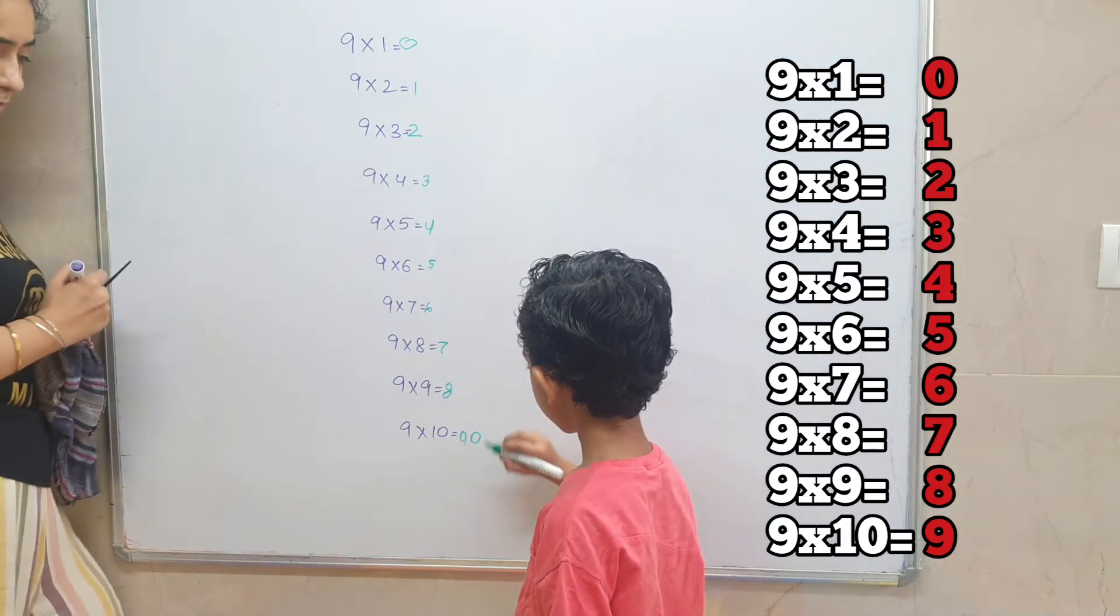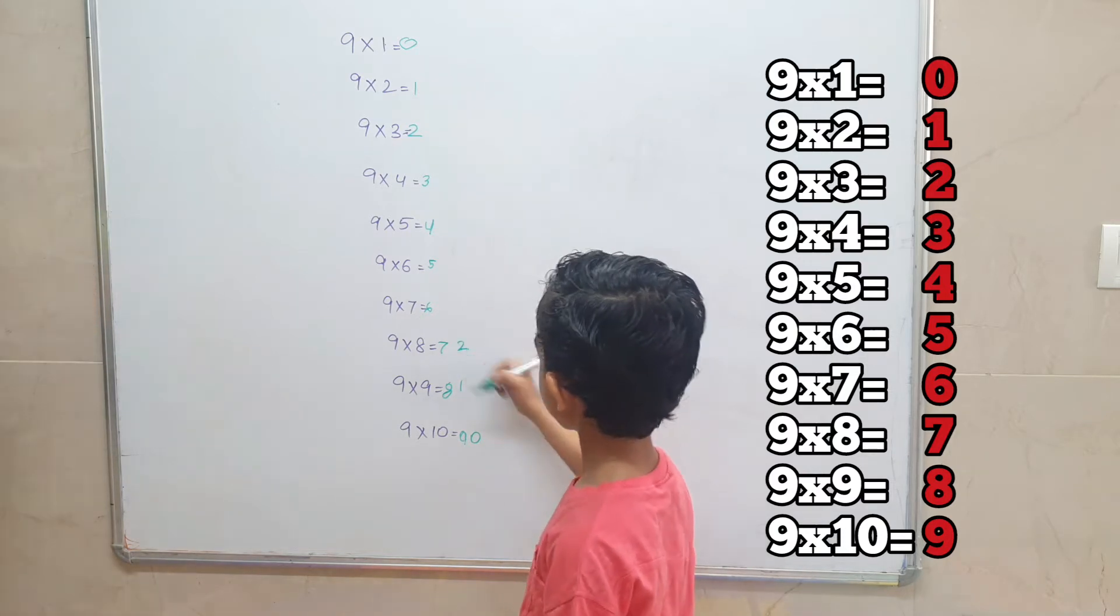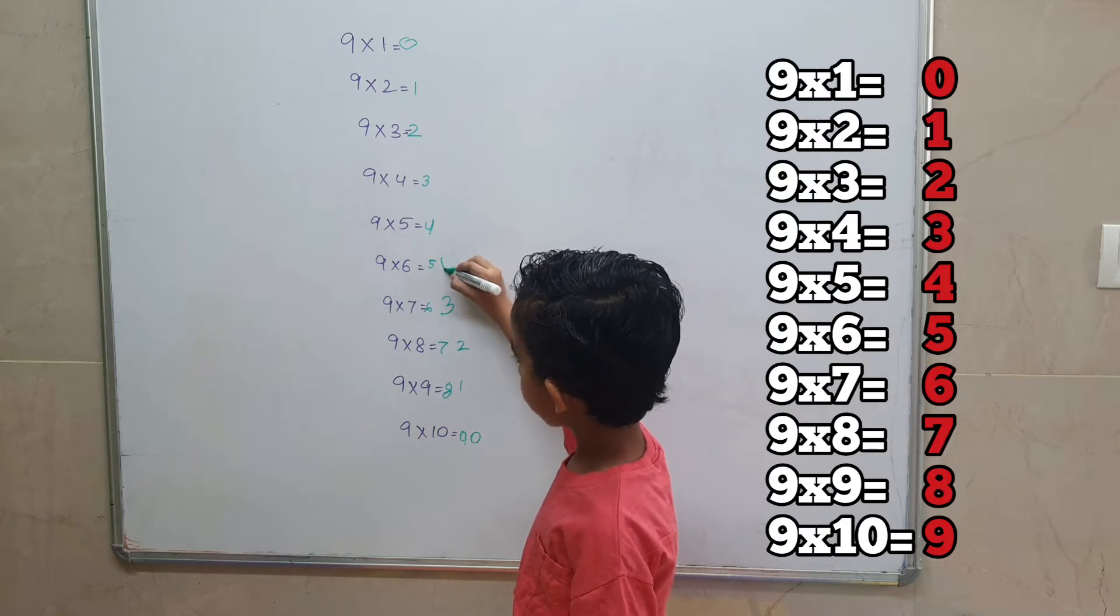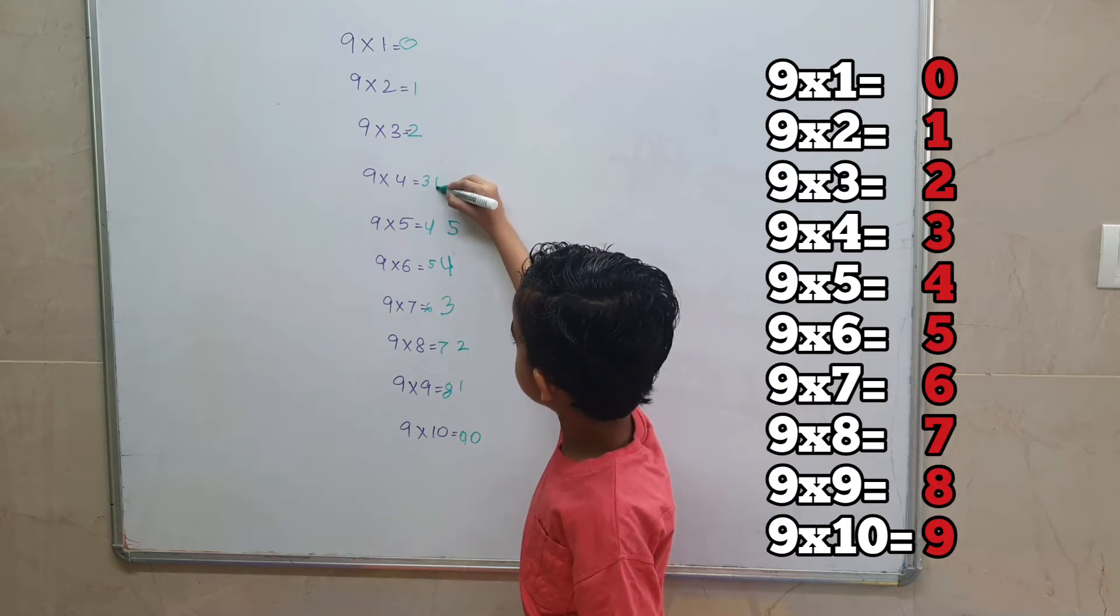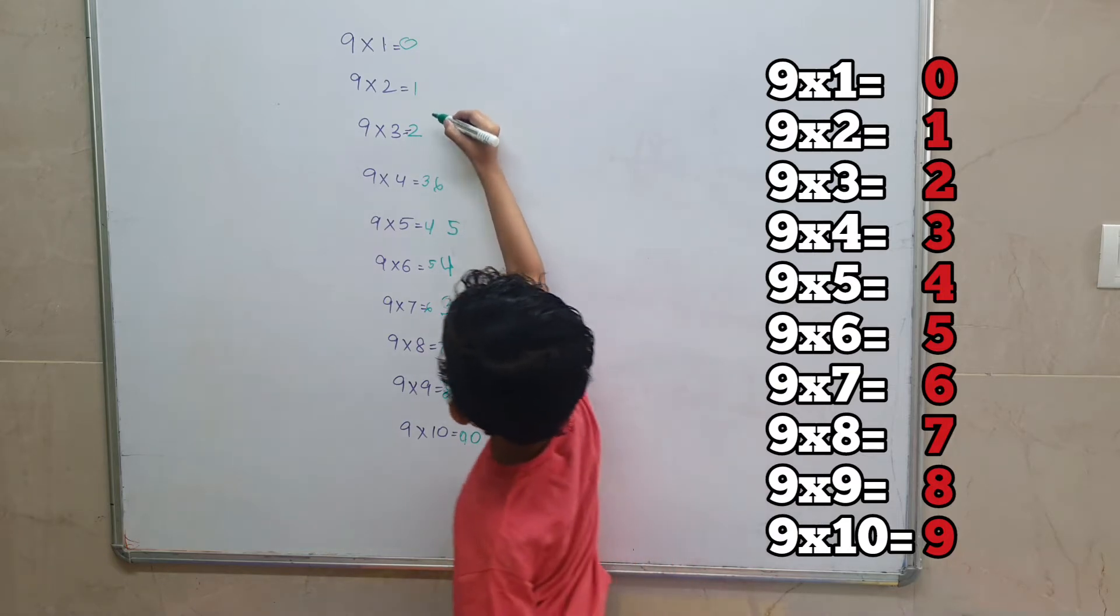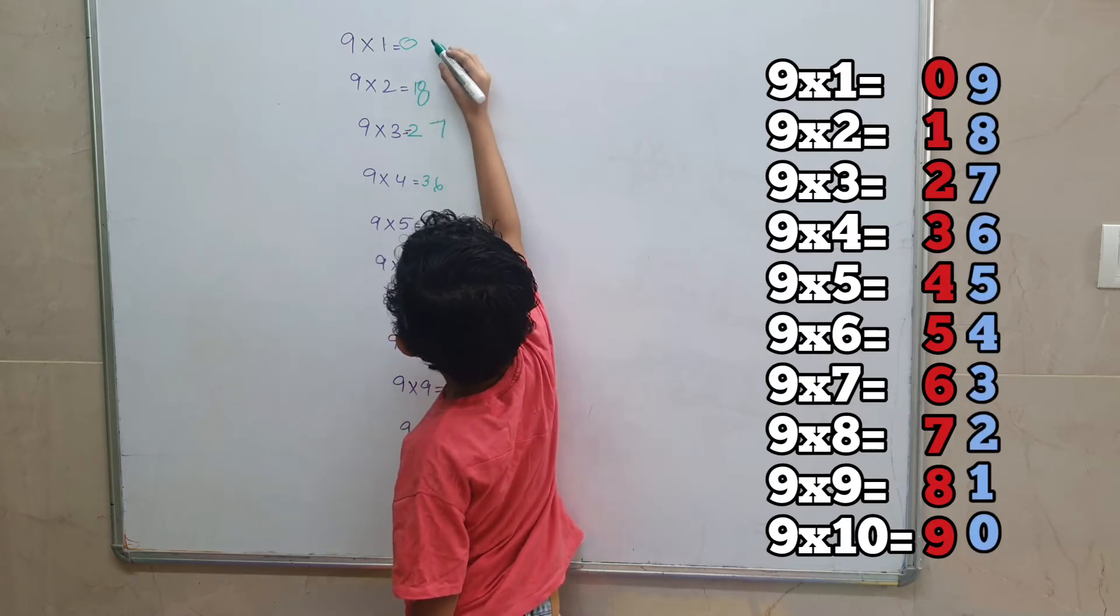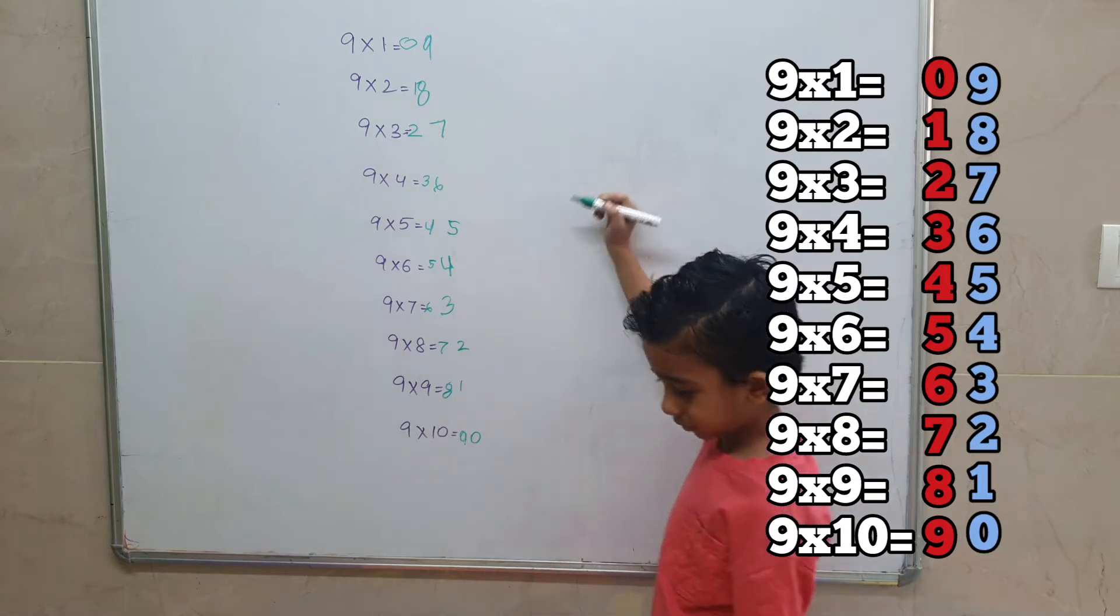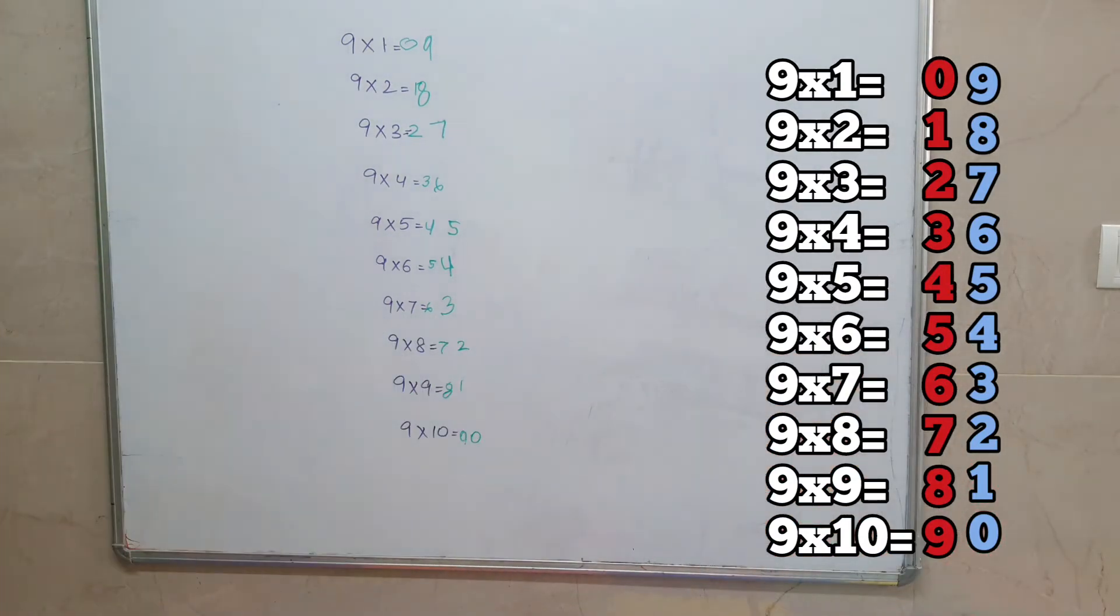Zero, zero, okay, one, two, three, four, zero, five, okay, six, okay, seven, okay, eight, okay, nine. Should I write it for you? Good. So this is how you solve the table of nine.